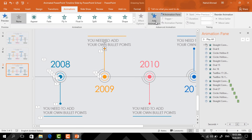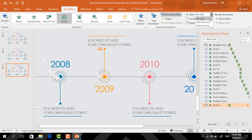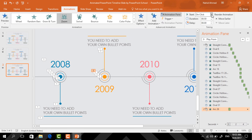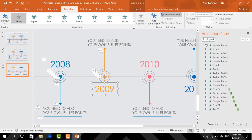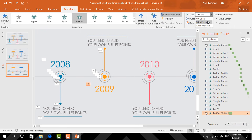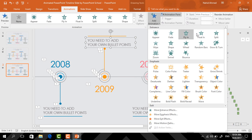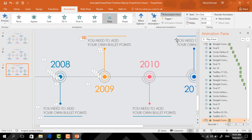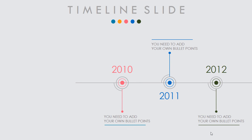Select the small circle, click on Add Animation, select Zoom, set start After Previous. Then select the arc shape, click on Add Animation, select Zoom, set start After Previous. Now select the text box, click on Add Animation, select Float In, set start With Previous, duration 0.5 seconds. Select the other text box, click on Add Animation, select Float In, from Effect Options select Float Down, set start With Previous, duration 0.5 seconds. Now select the straight line, click on Add Animation, select Wipe, from Effect Options select From Left, set start After Previous.